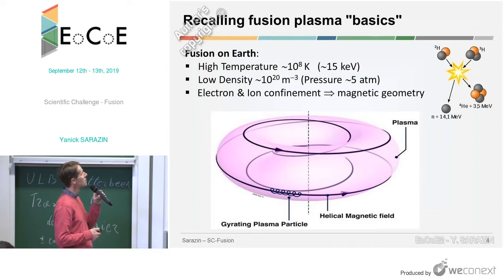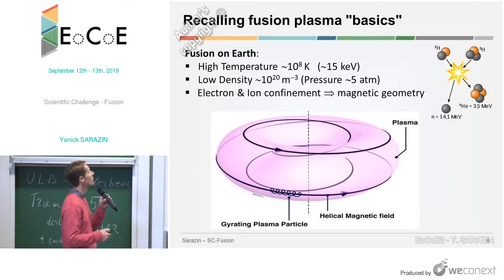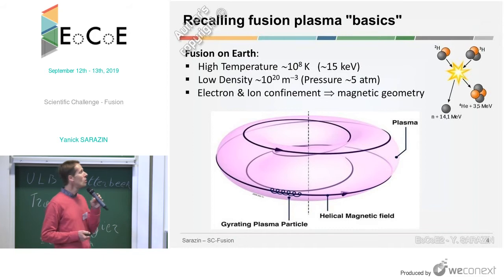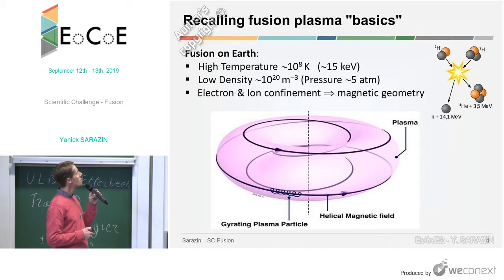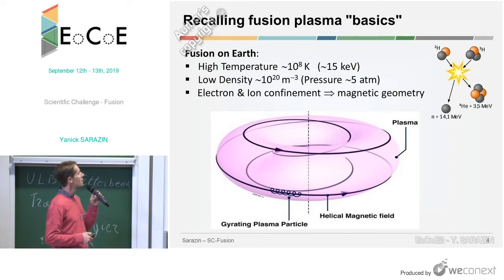It's 10⁸ Kelvin, which is roughly 15 keV, and it's very low density — 10²⁰ particles per cubic meter. This high temperature and low density gives a pressure equivalent to the pressure in the tires of your bicycle, about five atmospheres. To reach fusion and for it to be economically viable, you need to confine the electrons and ions, which are decoupled at those temperatures, requiring a quite complex magnetic geometry with helical field lines on nested donut-like magnetic flux surfaces.